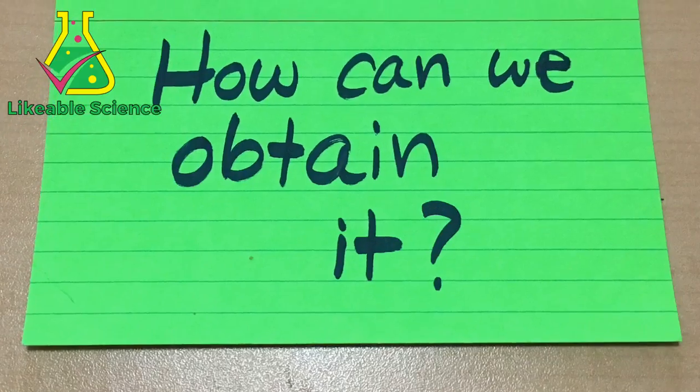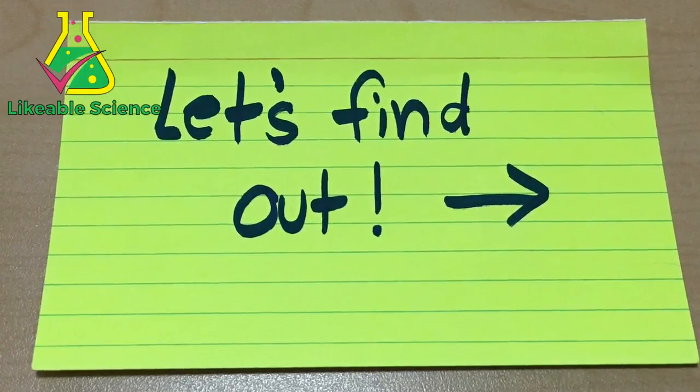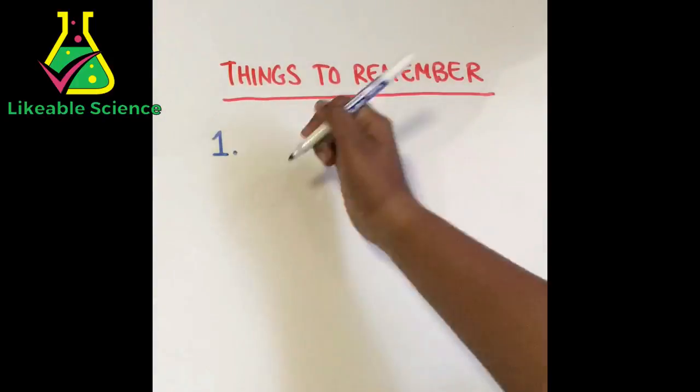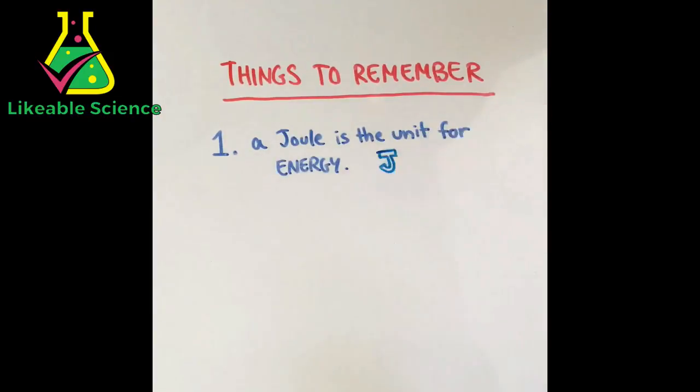But what are the different types of energy and how can we obtain it? Let's find out. Before you learn about the types of energy, you have to remember a few things. Number one, a joule is the unit for work or energy.